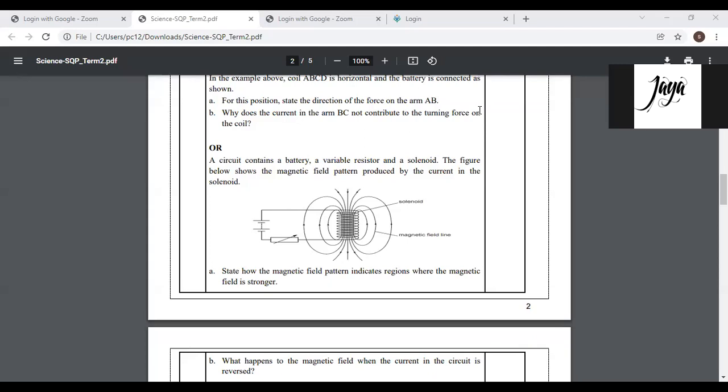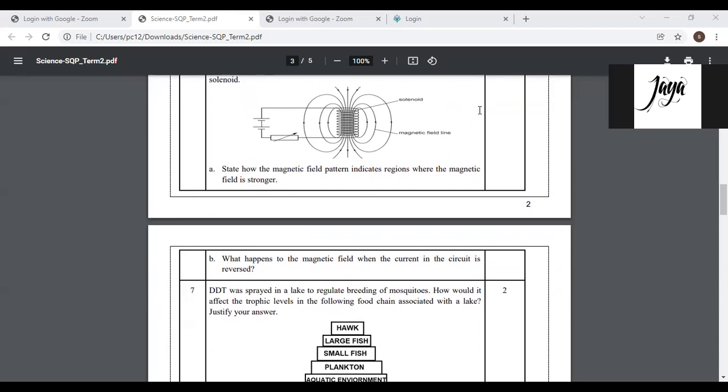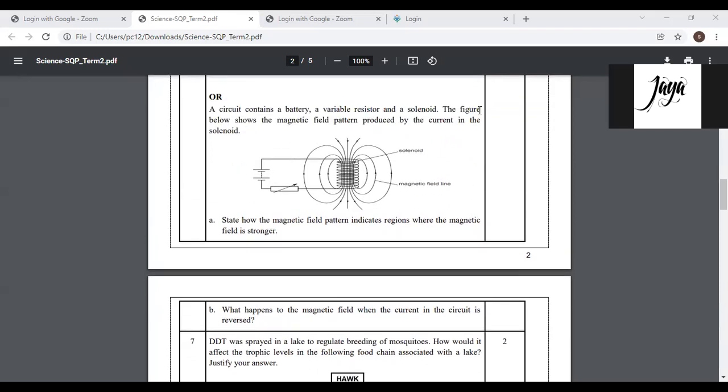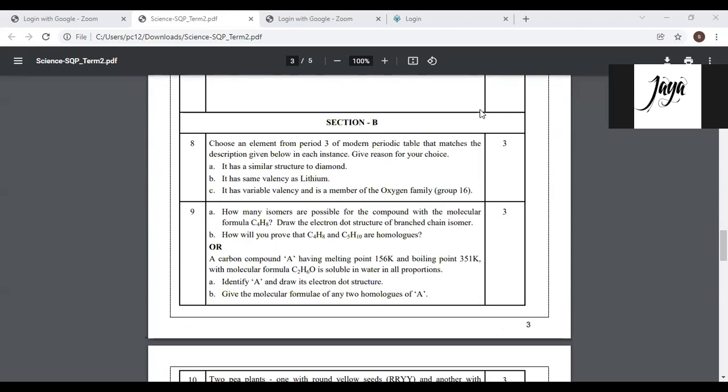Ma'am, from the magnetic field pattern we can know that magnetic field is stronger near the poles because near the poles the magnetic lines are closer to each. Yes exactly. So near the ends of solenoid magnetic field is strongest because we know that relative closeness of magnetic lines gives an idea about the strength of magnetic field in that region. And from this diagram we see that crowding of lines is maximum near the ends of solenoid. B part what happens to magnetic field when current in the circuit is reversed? Obviously the polarity of solenoid as a magnet will change. North pole behave like south and south pole will behave like north pole now. So polarity of the solenoid will change. Let us see next question. Question number 11.